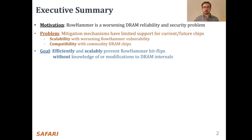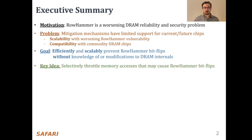The goal of this work is to efficiently and scalably prevent row hammer bitflips without knowledge of or modifications to DRAM internals. Our key idea to achieve this goal is to selectively throttle memory addresses that may cause row hammer bitflips.